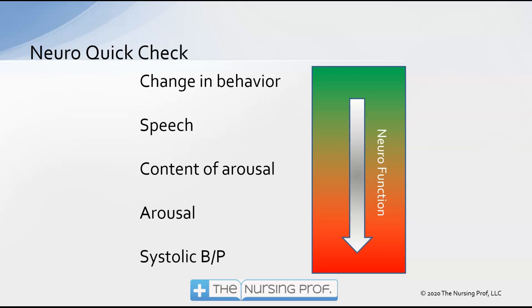Starting at the top, we notice the first step is change in behavior — that's one of the first things that's going to change. Next we have speech, then content of arousal, then arousal itself, and lastly systolic blood pressure.